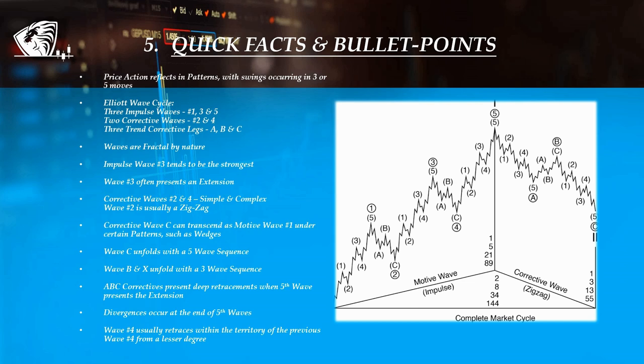Impulse wave 3 is usually the strongest swing but sometimes number 5 can be just as strong. This is because traders take profit on the third impulsive wave and then after the fourth retracement wave they get in again on the fifth impulsive wave.